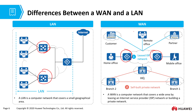A local area network belongs to an institution, organization, or company, while a wide area network is in most cases provided by an internet service provider. Wide area networks and local area networks usually use different protocols or technologies, but this difference only happens at the data link layer and the physical layer.